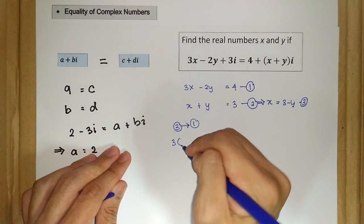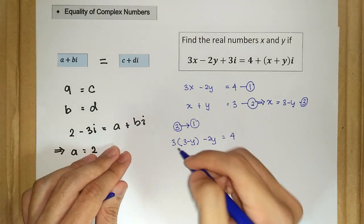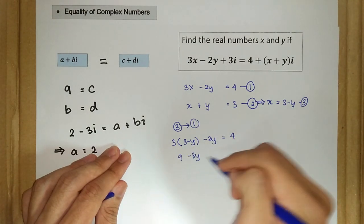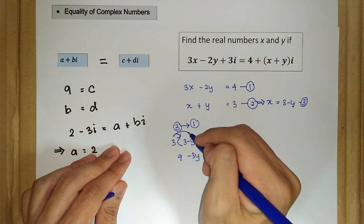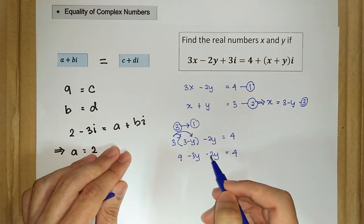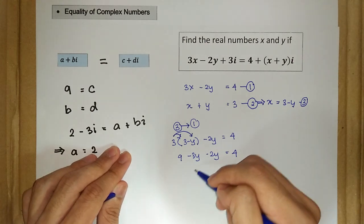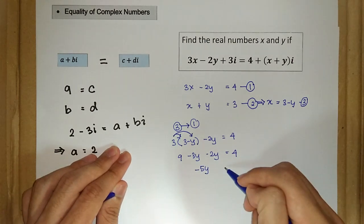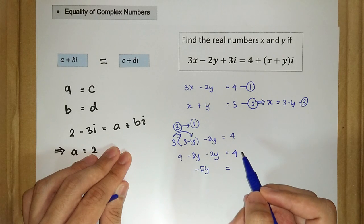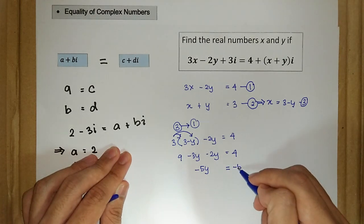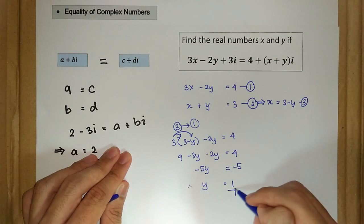So we have 3 times (3 minus y) minus 2y is equal to 4. Simplifying, we get 9 minus 3y minus 2y is equal to 4. So negative 5y is equal to 4 minus 9, which is negative 5. Therefore the value of y is equal to 1.